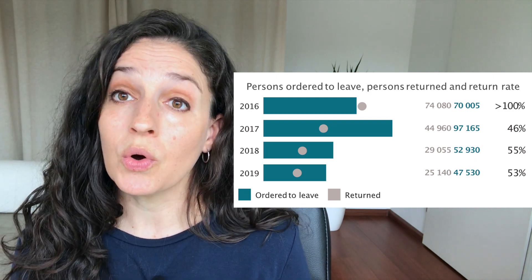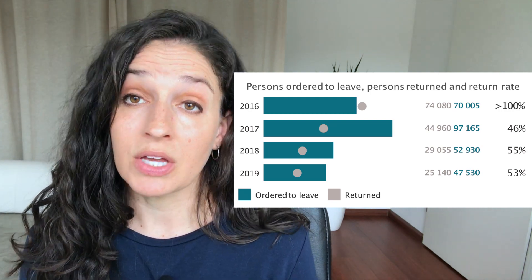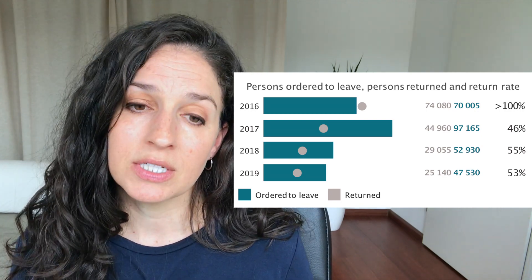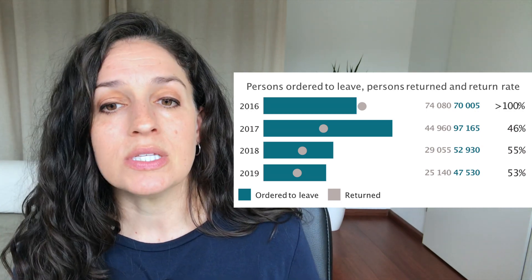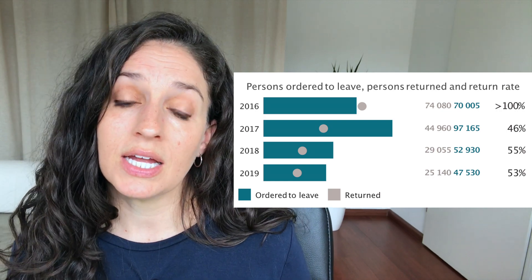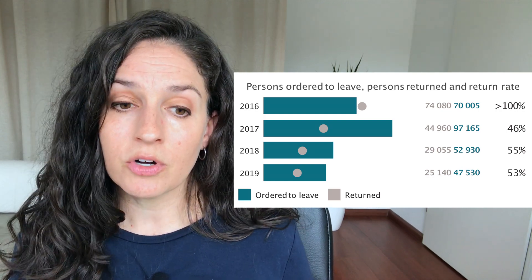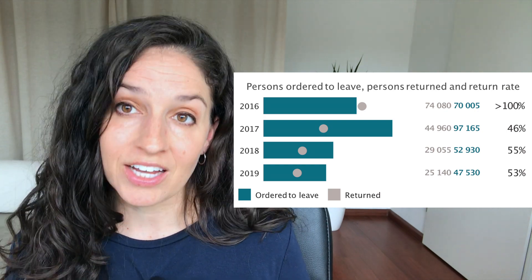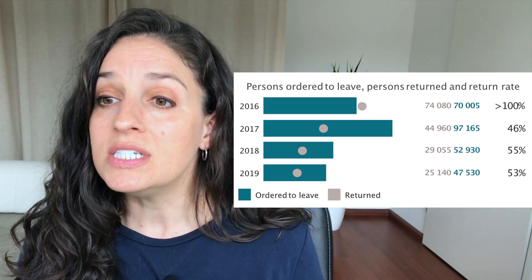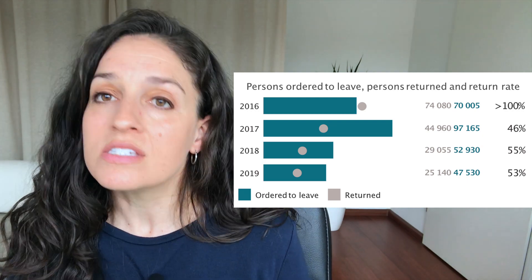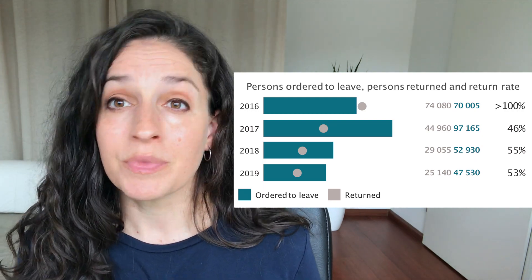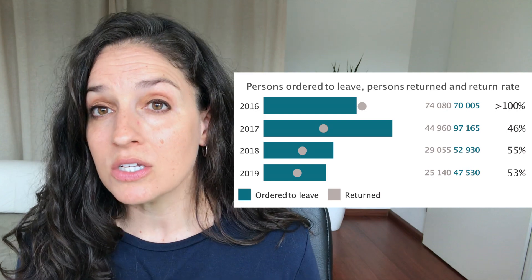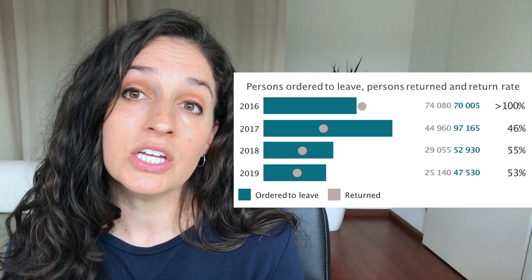One possible measure of irregular migration is looking at the difference between people who were ordered to leave the country — meaning they no longer had the right to stay — and those that actually left. In 2017, 2018, and 2019, the number of people ordered to leave was more than the number that actually returned. This difference tells you something about the rate of irregular migration — people who stayed despite not being allowed to.